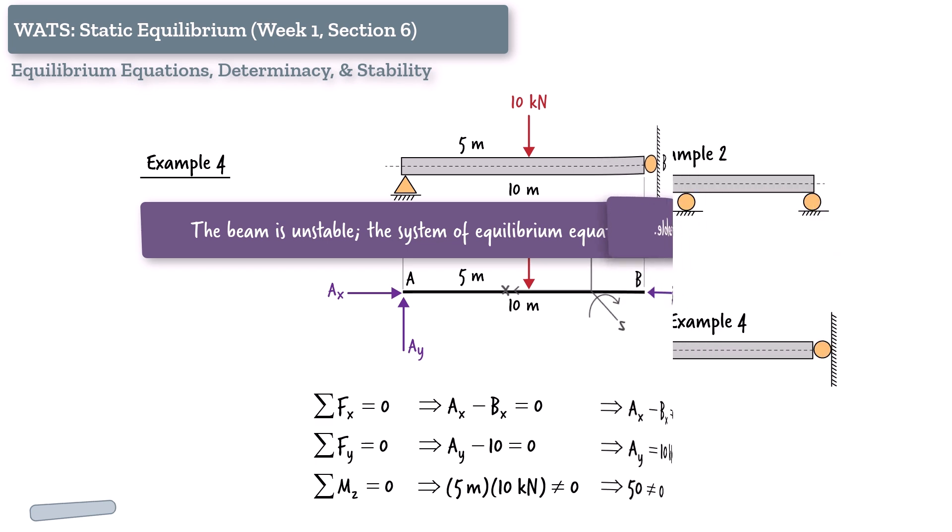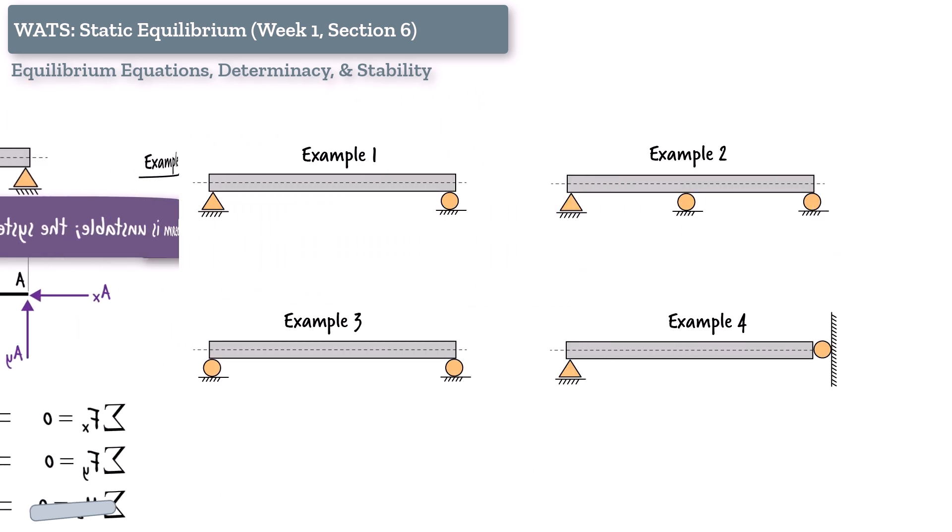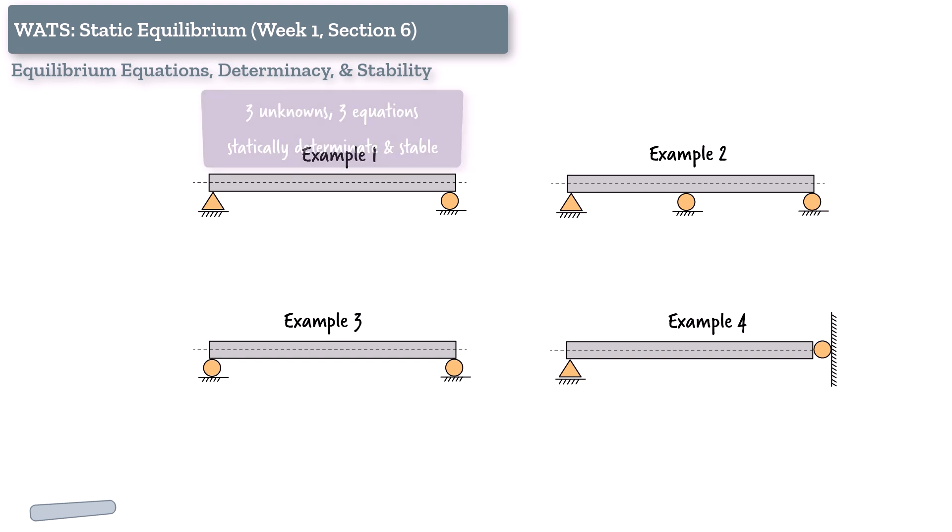Let's take a step back and reflect on what these four examples have shown us. In example one, with a pin and a roller, we had three unknowns and three equations, and everything worked. The system was statically determinate and stable. That's the textbook case.